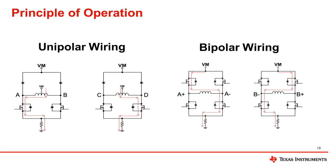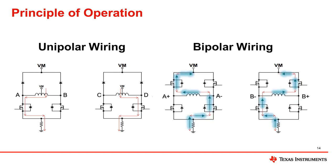In unipolar motor drivers, the current only goes one direction, so the current only has one polarity, hence unipolar stepper. A bipolar motor has current that operates in one direction and then another to help the motor spin. We will now discuss these differences in more detail.